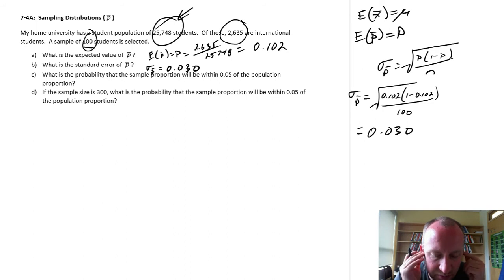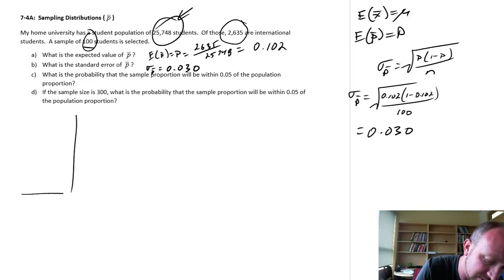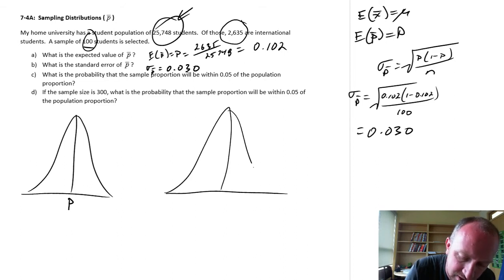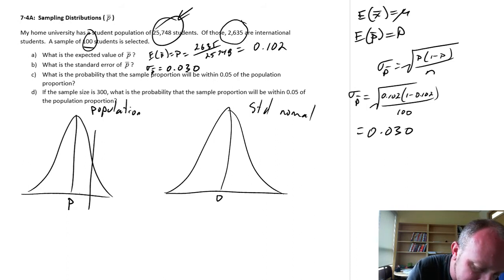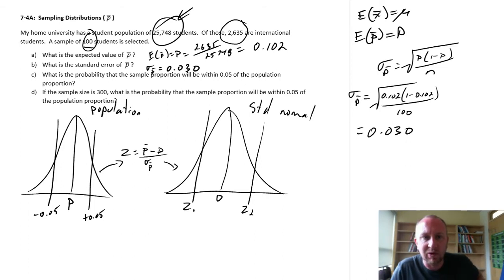Okay, what is the probability that a sample proportion will be within 0.05 of the population proportion? Same exercise we've done with sample means. Again, I'm going to have my two distributions. This one is centered on the population proportion, and this one is my standard normal. And here I want to determine what's the probability of getting a sample proportion within 0.05. So this is p plus 0.05. This is p minus 0.05. And so we need to translate that into our standard normal. I'm just going to shorthand this, divide that by the standard error, so that we can obtain those two z-scores, z2 and z1, that correspond with our population proportion.